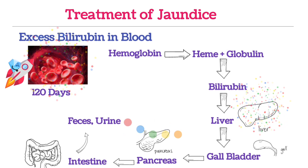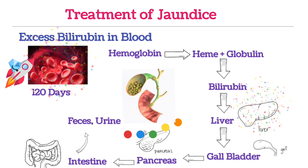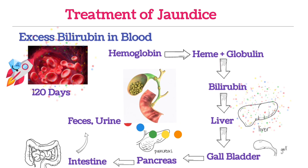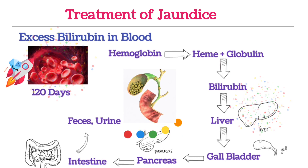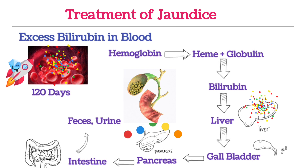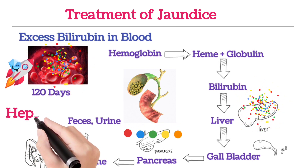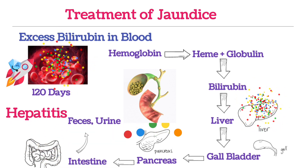If it is because of gallbladder stones, gallstone surgery should be done. If it is because of viral hepatitis, antiviral drug medicines should be taken. This is about the treatment of jaundice.